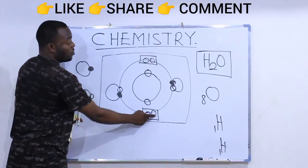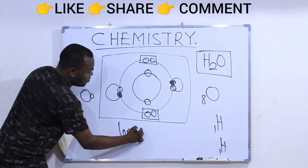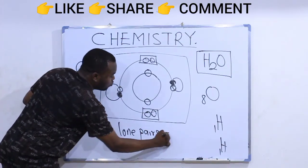One lone pair, another one lone pair. So our answer: the lone pairs are equal to two.